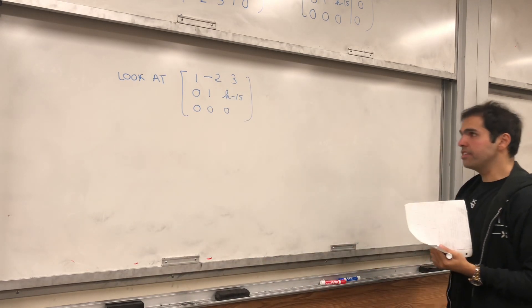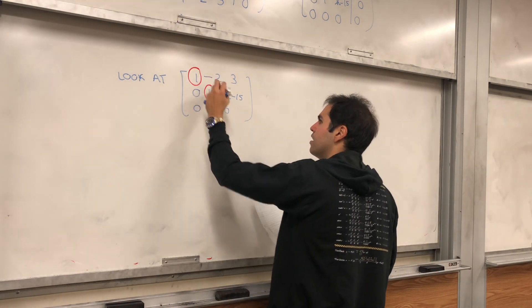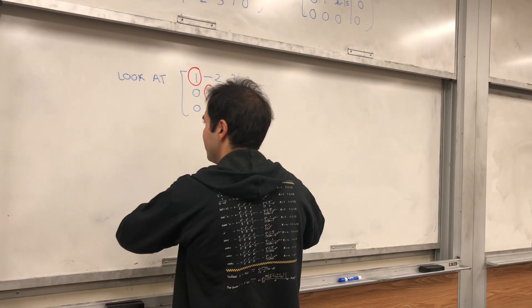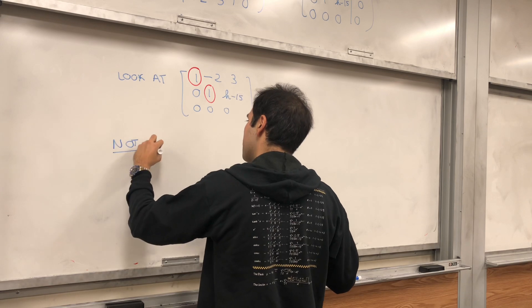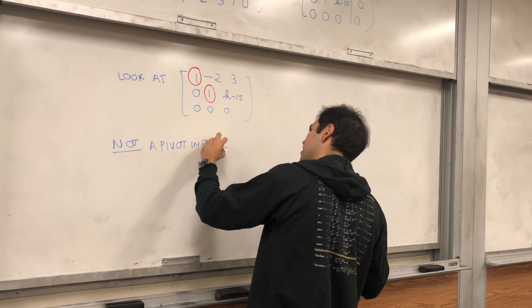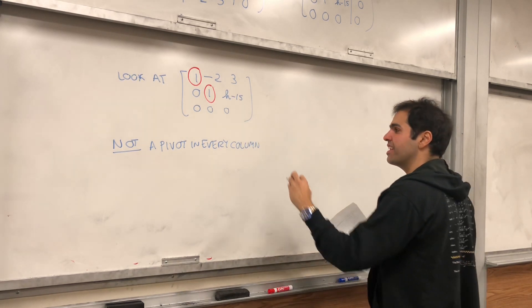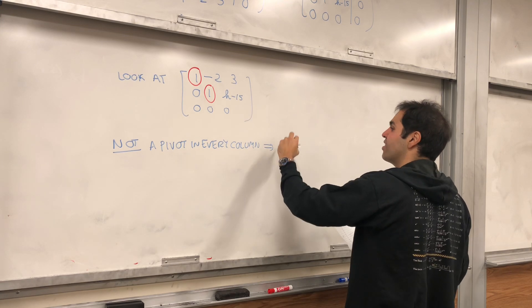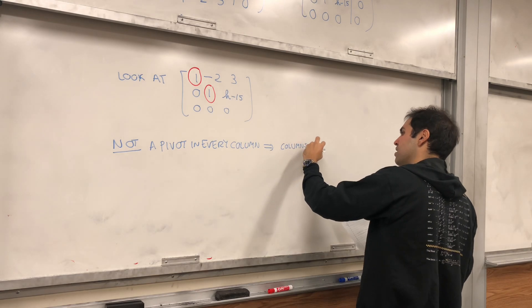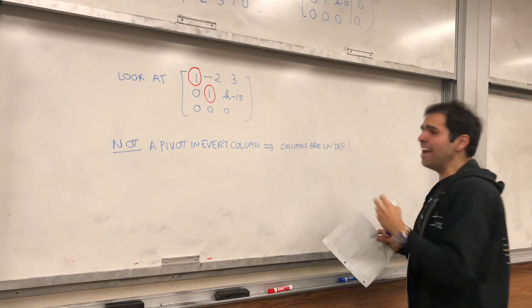What are the pivots? There are two pivots here. And in particular we don't have a pivot in every column. So not a pivot in every column. Why is that?